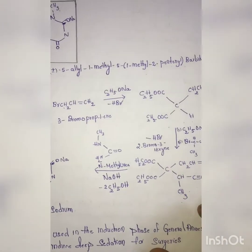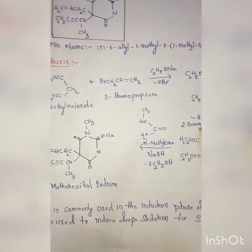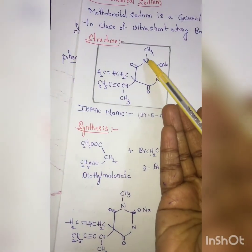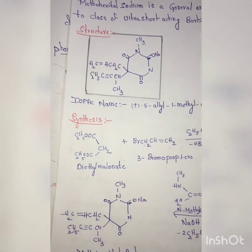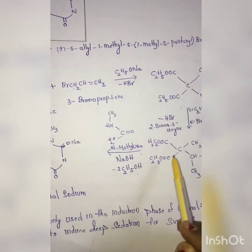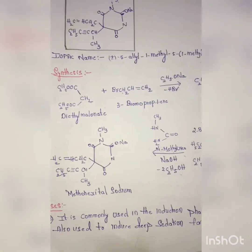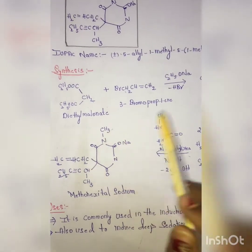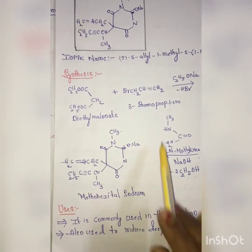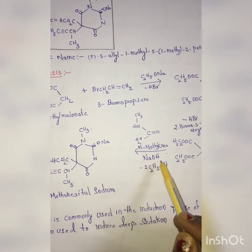Now the next step will be, now we have diethyl malonate derivative and here we are going to add N-methyl urea. This is called N-methyl urea. So as usual, we have a cyclic structure and one nitrogen will be having methyl group, and already two carbons R5 and R5 dash are there.